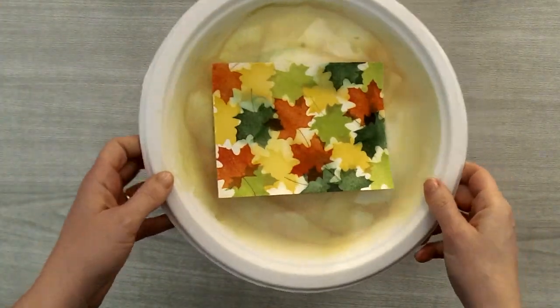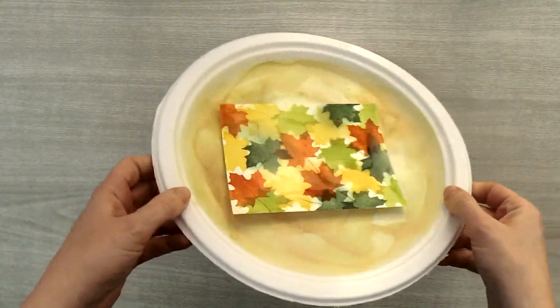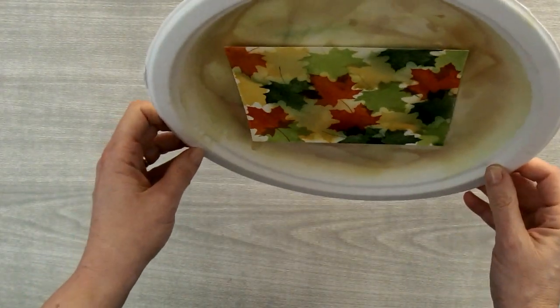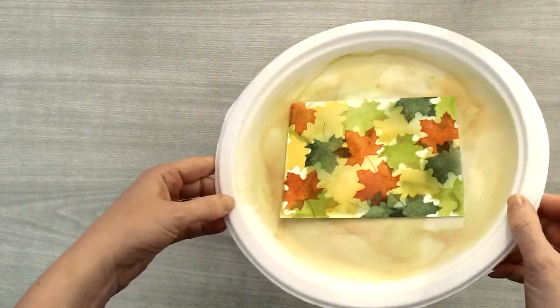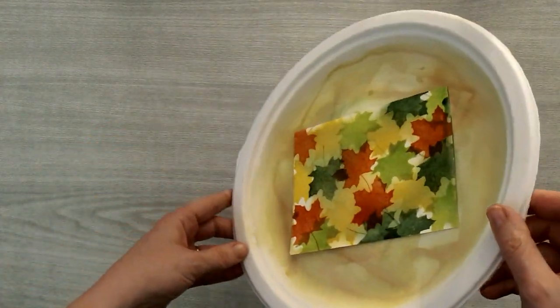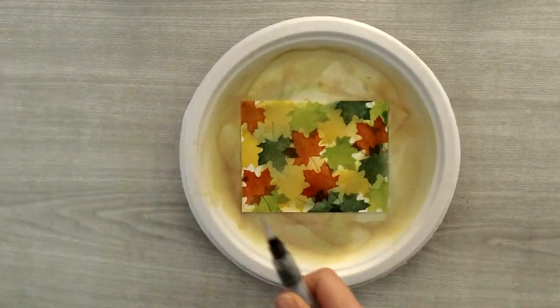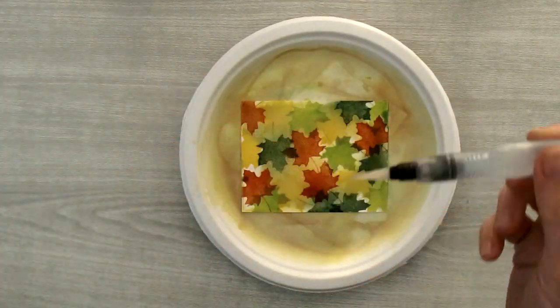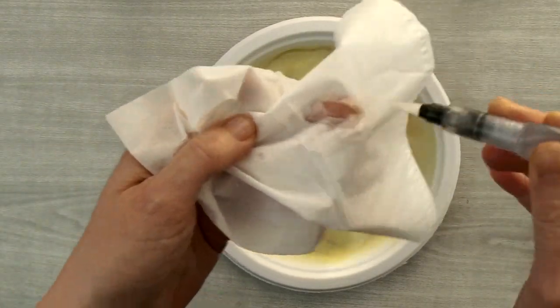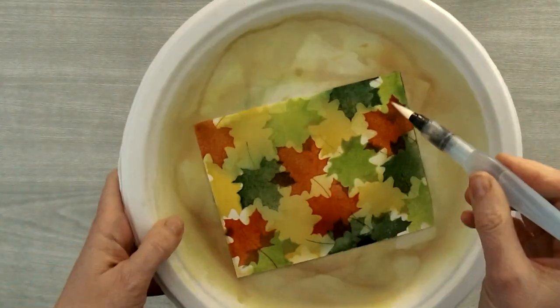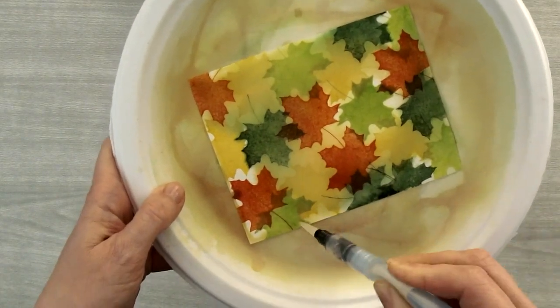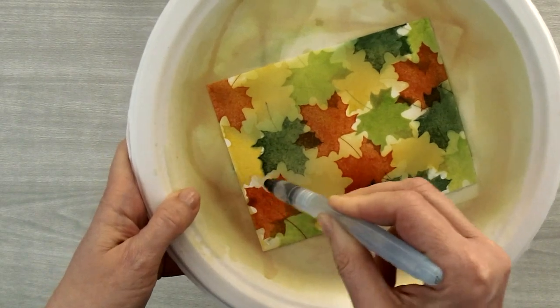And then I'm going to start swirling the water around. You notice it's going to start running. And you're going to notice after a while that there's going to be probably some white spots where the water hasn't hit. So that's when I come in and I take my aqua painter. I'm just going to make sure any of those places that are white just get hit with a little bit of water.